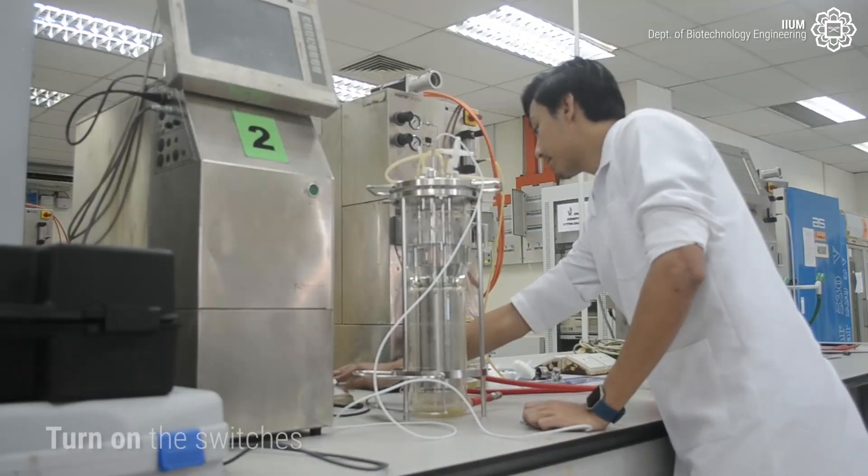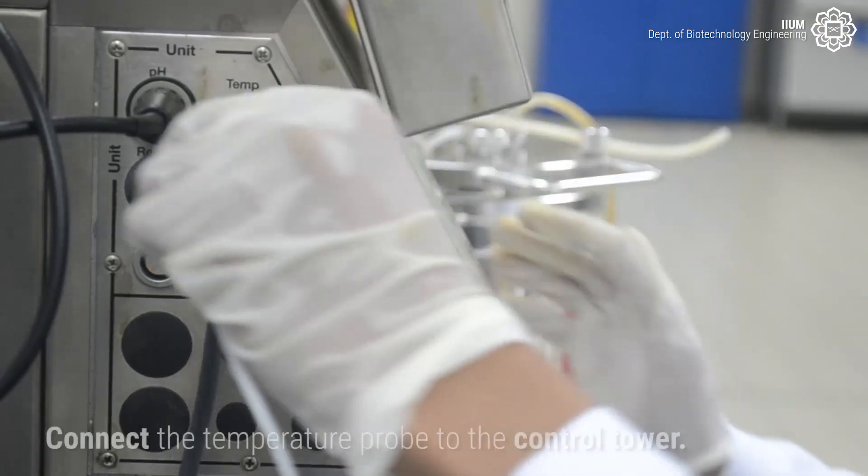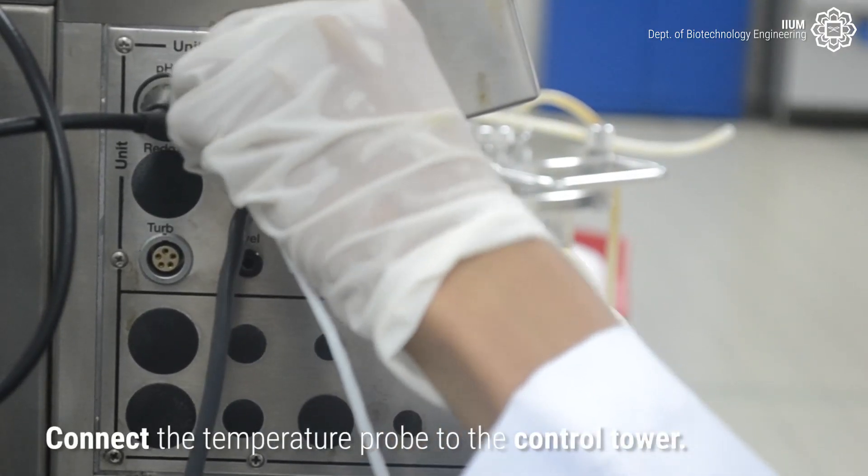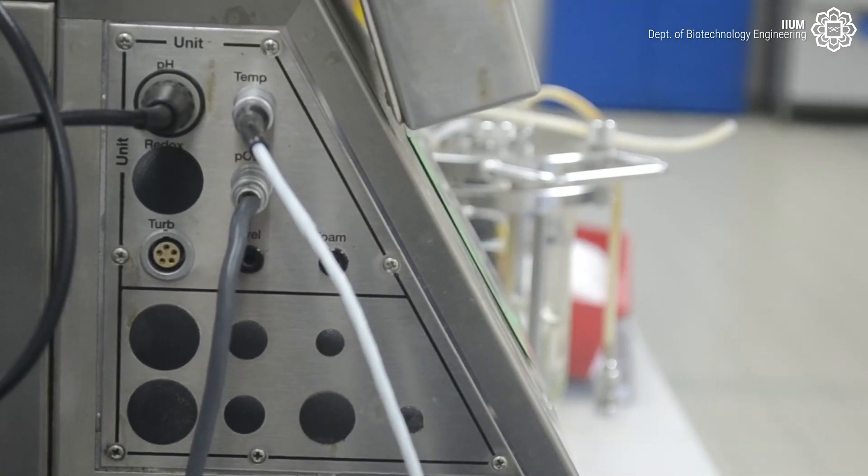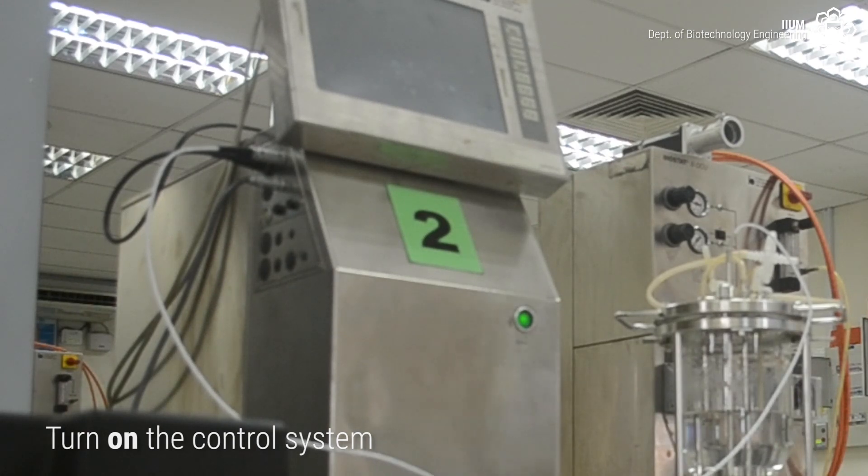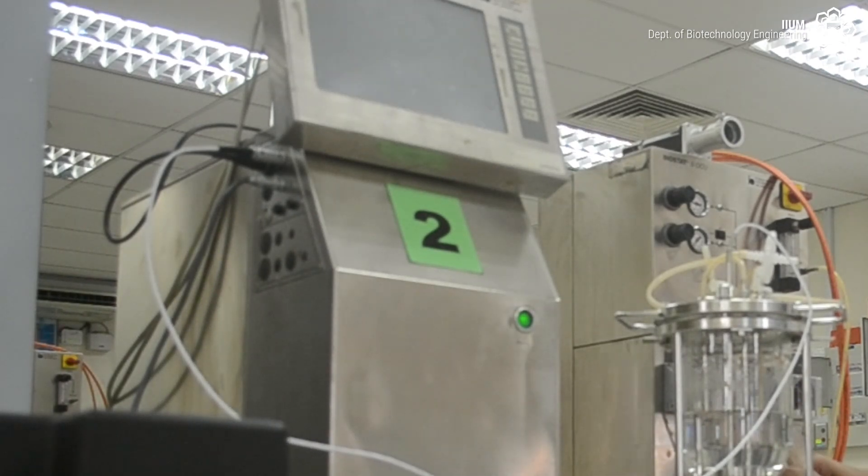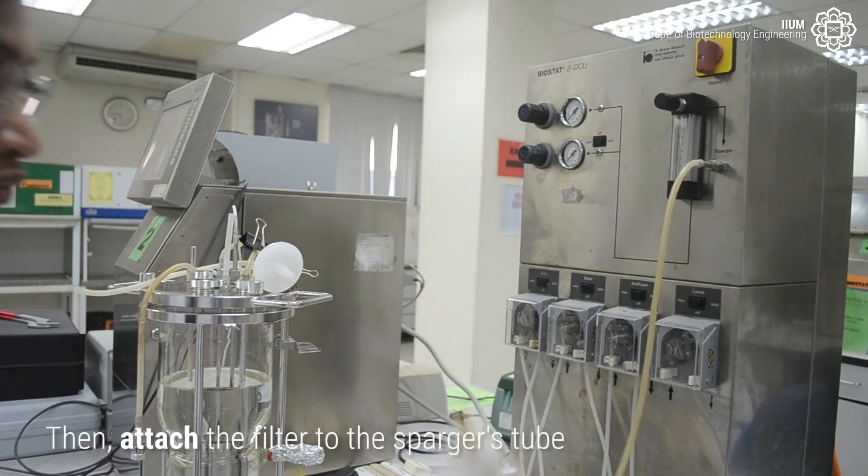First, turn on the switches. Connect the temperature probe to the control tower. Turn on the control system. Then attach the filter to the sparger's tube.